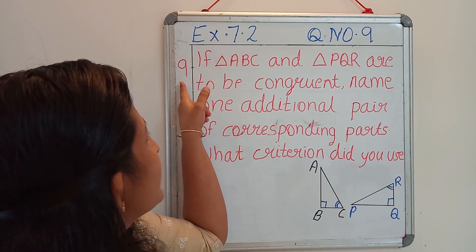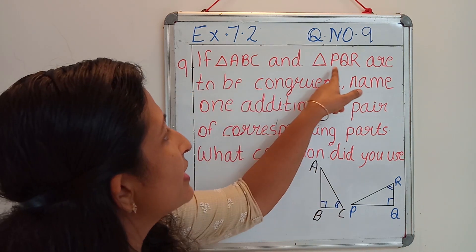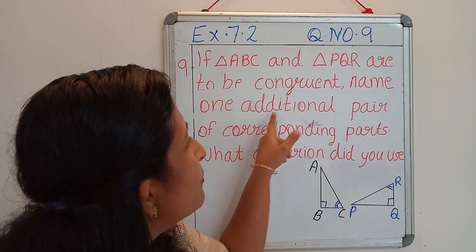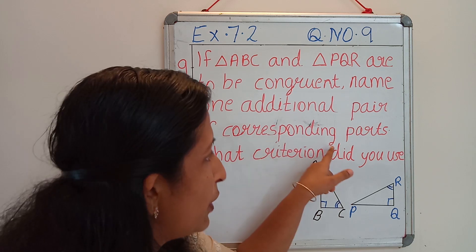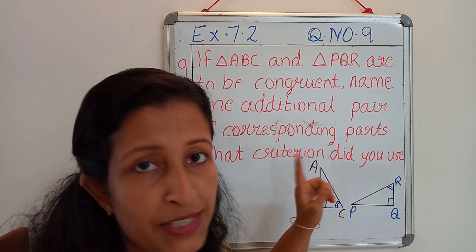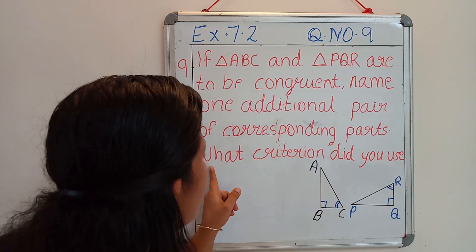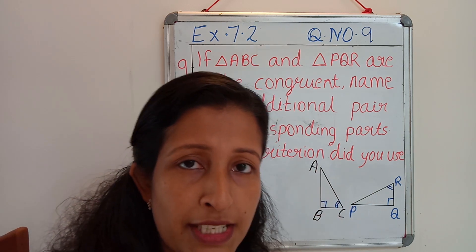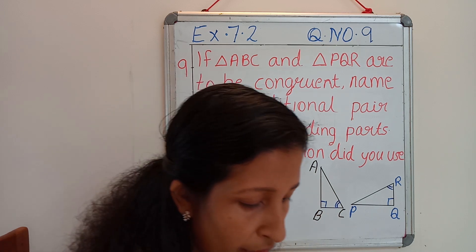Question 9 says that if triangle ABC and triangle PQR are to be congruent, name one additional pair of corresponding parts. This is our first question. And one more question, what criterion did you use? We have to attend two questions in this ninth one.